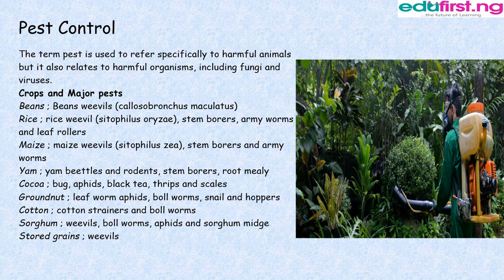Pest Control. The term pest is used to refer specifically to harmful animals, but it also relates to harmful organisms including fungi and viruses. Crops and their major pests: Beans — bean weevils. Rice — rice weevils, stem borers, armyworms, and leaf rollers. Maize — maize weevils, stem borers, and armyworms. Yams — yam beetles and rodents, stem borers, and root mealybugs. Cocoa — bugs, aphids, black ants, thrips, and scales. Groundnuts — leaf worm, aphids, bollworms, snails, and uppers. Cotton — cotton stainers and bollworms. Sorghum — weevils, bollworms, aphids, and sorghum midge. Stored grains — weevils.